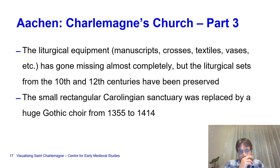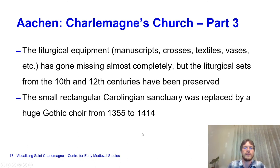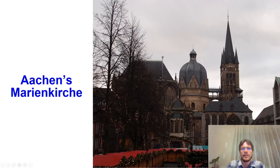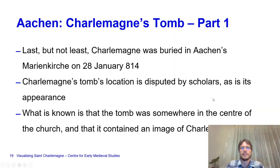There is a small rectangular Carolingian sanctuary, of which only walls remain, which was replaced by the huge Gothic choir built from 1355 to 1414. The year 1414 was the 600th anniversary of Charlemagne's death—600 years later they created this building as a worthy addition to the complex.